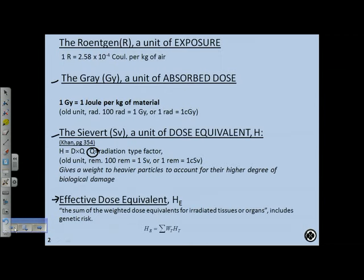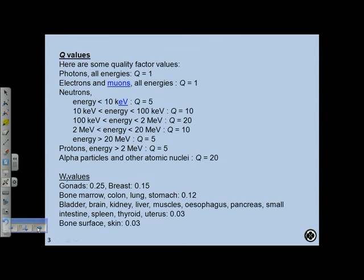The Q values: for photons of all energies, Q equals 1. For electrons and muons of all energies, Q equals 1, meaning dose and dose equivalent are the same for these. For neutrons, Q varies with energy: less than 10 keV gives Q=5; 10–100 keV gives Q=10; 100 keV to 2 MeV gives Q=20, meaning the most biological damage; 2–20 MeV drops to Q=10; and greater than 20 MeV drops to Q=5. Neutrons are always more biologically effective than photons and electrons.